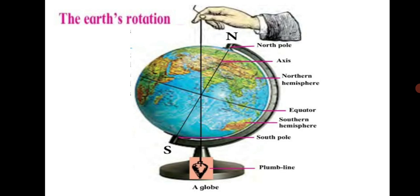That is, the Earth's axis is inclined. The Earth rotates with its axis inclined like this. The line NS shown in the picture represents the Earth's axis. It passes through the center of the Earth.